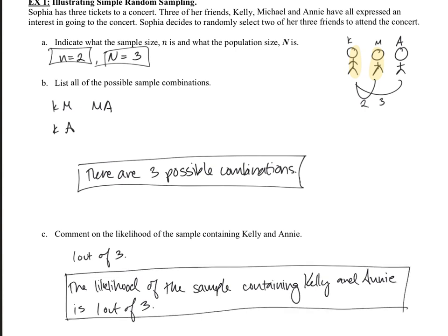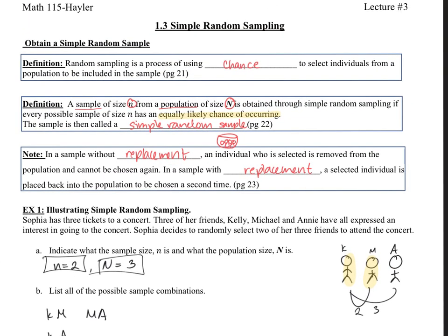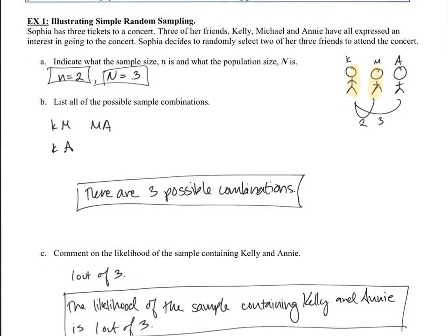And notice the likelihood of getting each of our, any of our samples was the same. It was one out of three for all of the options, which fits the definition we had with simple random sampling.